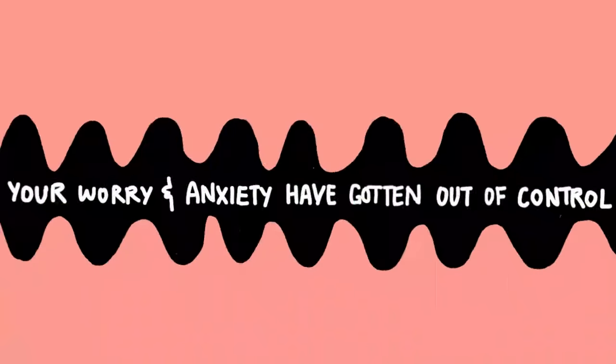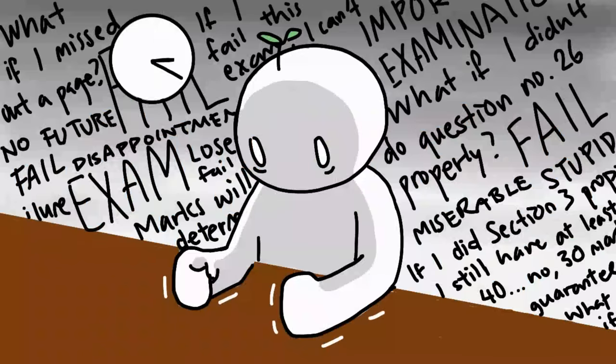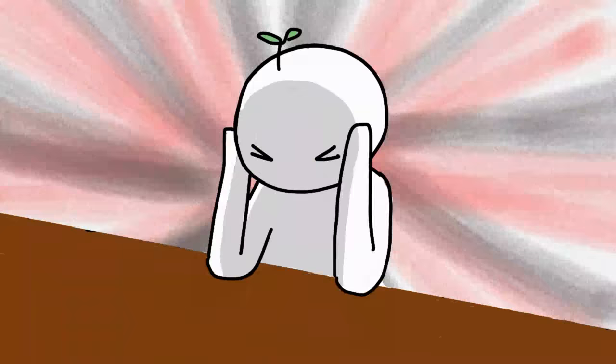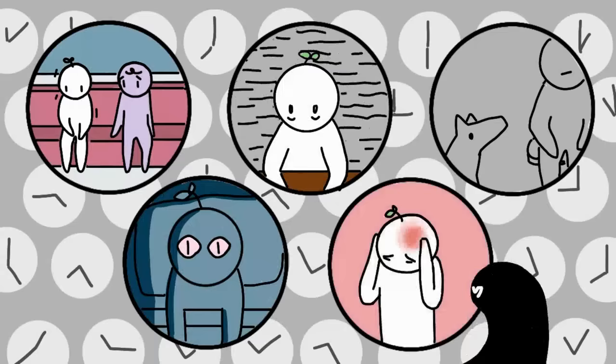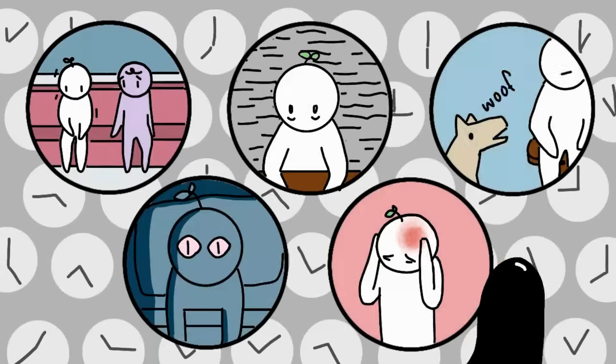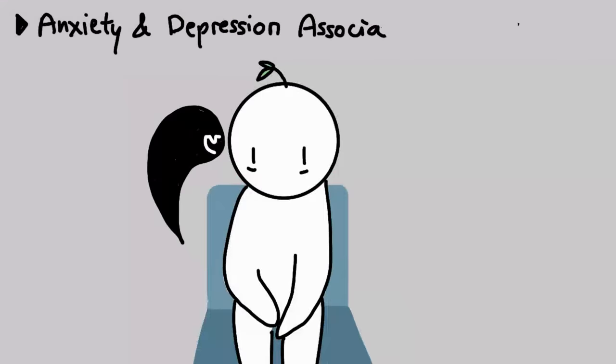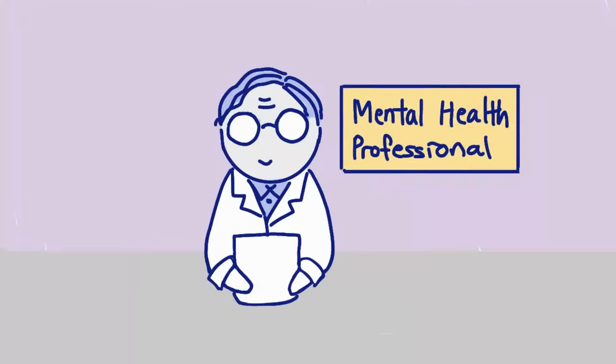Number three: Your worry and anxiety have gotten out of control. Have you ever found yourself worrying but can't shut it off? According to the National Institute for Mental Health, it may be a sign of an anxiety disorder. Other signs of anxiety disorders include having problems relaxing, insomnia, racing thoughts, unexplained aches and pains, or being easily irritated. The Anxiety and Depression Association of America suggests that if you've ever felt this way on most days for at least six months, you should consider talking to a mental health professional about your symptoms.